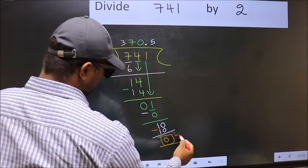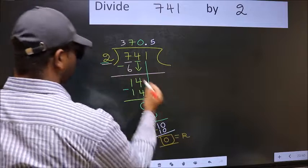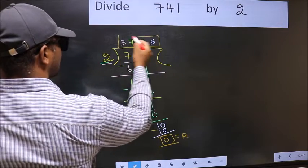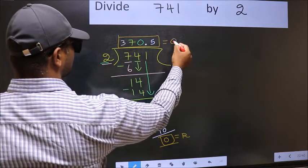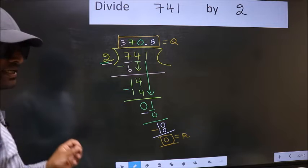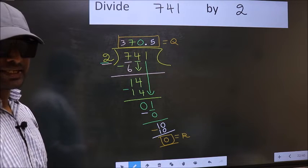So this is our remainder. And this is our quotient. Did you understand where the mistake happens? You should not do that mistake.